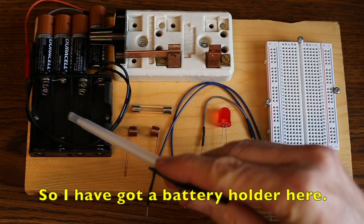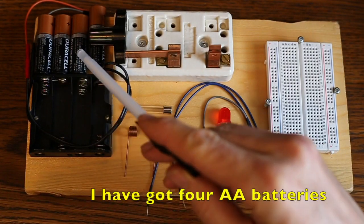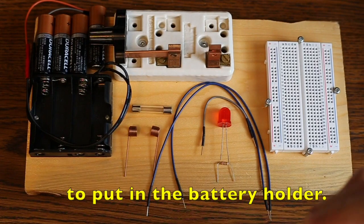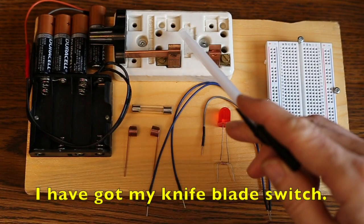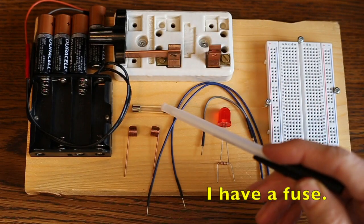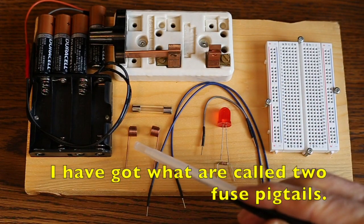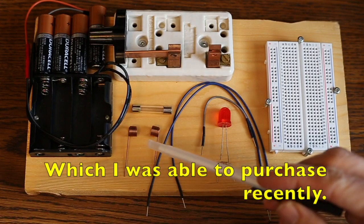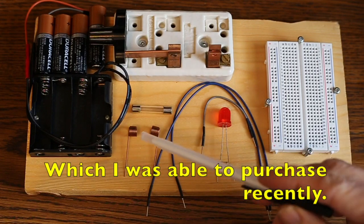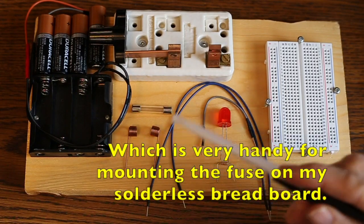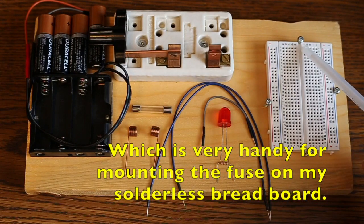So I've got a battery holder here, I've got four AA batteries to put in the battery holder, I've got my knife blade switch, I have a fuse, I have what are called two fuse pigtails, which I was able to purchase recently, which is very handy for mounting the fuse on my solderless breadboard.